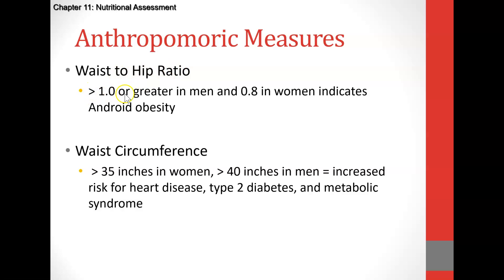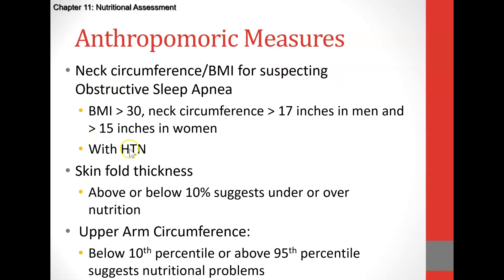Skin folds above or below 10% suggest over or undernutrition. For laboratory values: fasting glucose greater than 126 is abnormal. The hemoglobin A1C (HbA1c) measures blood sugar trends over the last two months — a value greater than 6.5 is indicative of type 2 diabetes. Hemoglobin for women should be at least 12 (range 12–16); hematocrit for women is 37–47. Men's hemoglobin is 14–18, and their hematocrit is approximately 40–52.